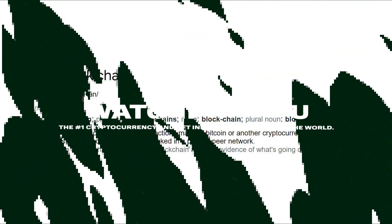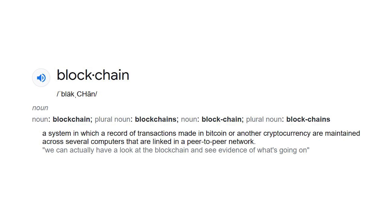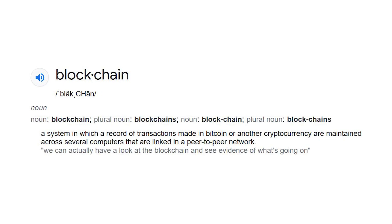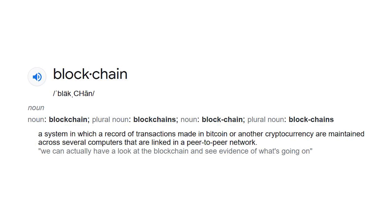The Oxford Dictionary describes the blockchain as a system in which a record of transactions made in Bitcoin or another cryptocurrency are maintained across several computers that are linked in a peer-to-peer network.